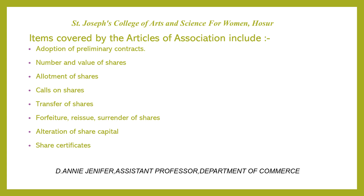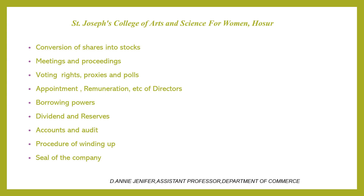The items that should be covered by the Articles of Association include: adoption of preliminary contracts, number and value of shares, allotment of shares, calls on shares, transfer of shares, forfeiture, reissue, surrender of shares, alteration of share capital, share certificates, conversion of shares into stock, meetings and proceedings, voting rights, proxies and polls, appointment and remuneration of directors, borrowing powers, dividend and reserves, accounts and audit, and procedure for affixing the seal of the company.